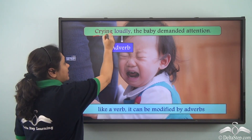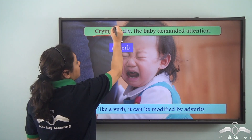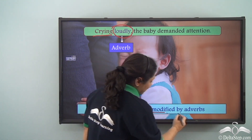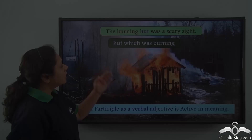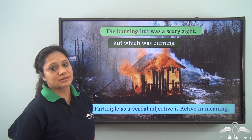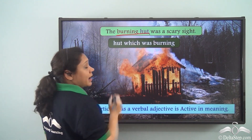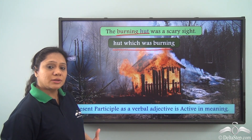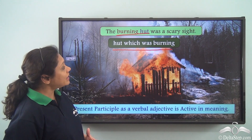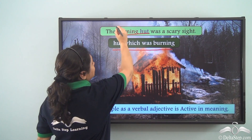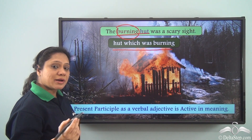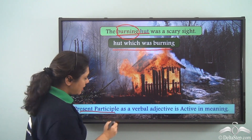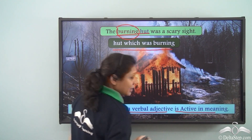'Crying' is the present participle here, which is modified by the adverb 'loudly.' So we can say that like a verb, participles can be modified by adverbs. Consider 'The burning hut was a scary sight.' When we say 'burning hut' we mean the hut which was burning — the hut is performing the action. So 'burning,' the present participle used as an adjective, is active in meaning. We can say that the present participle as a verbal adjective is active in meaning.